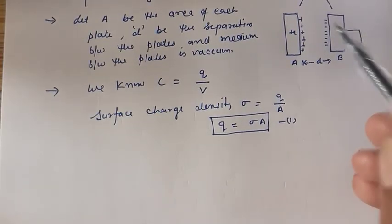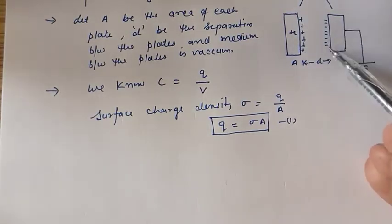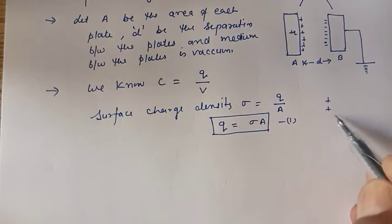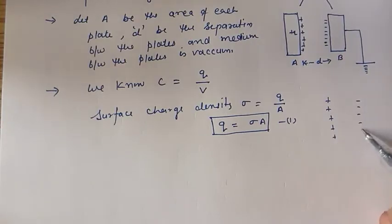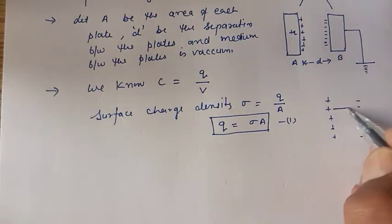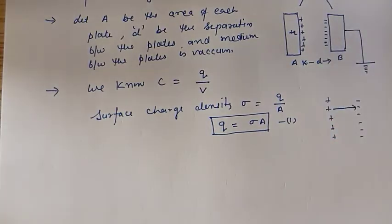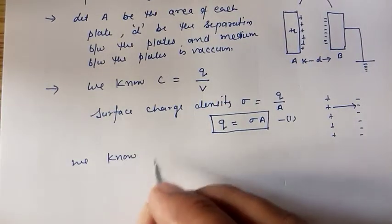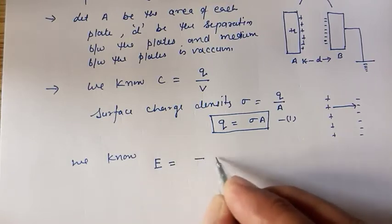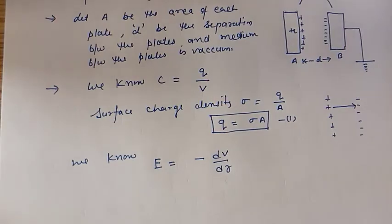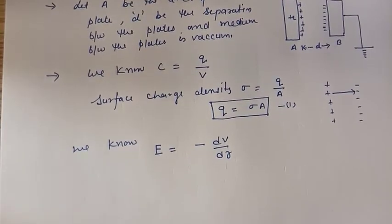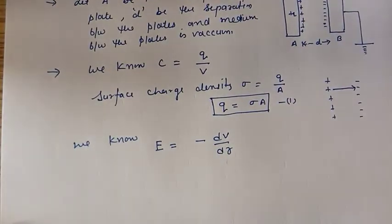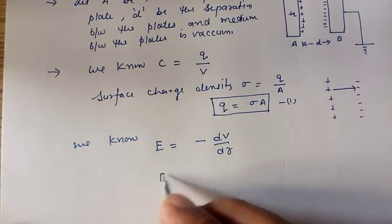Plate A has positive charge and plate B has negative charge, so the electric field is set up in the direction from positive to negative, that is from plate A to plate B. We know the relation between electric field and potential gradient: E equals minus dV upon dr.